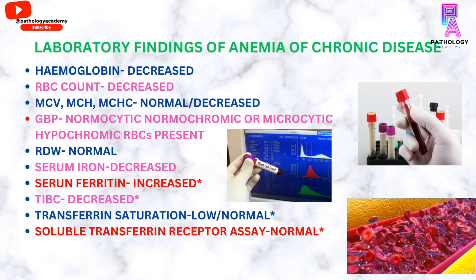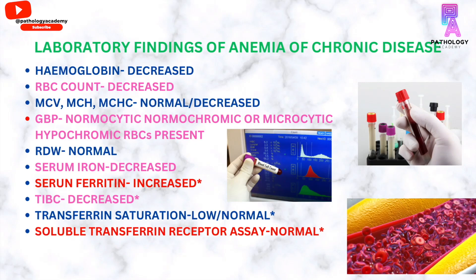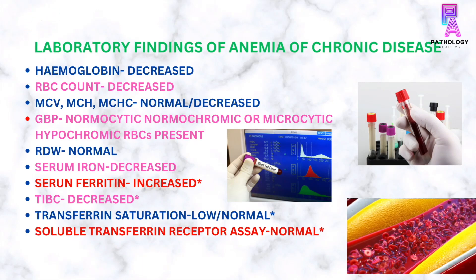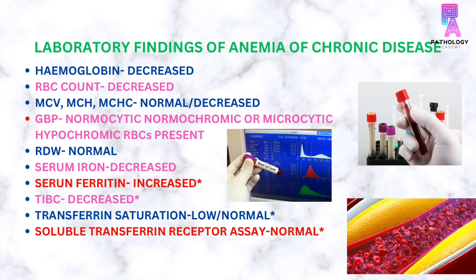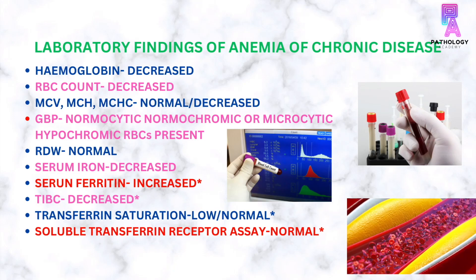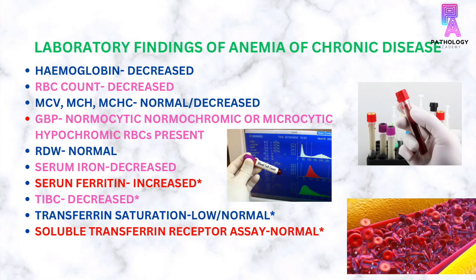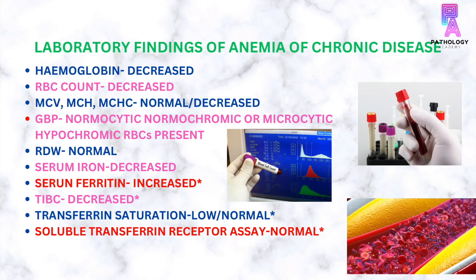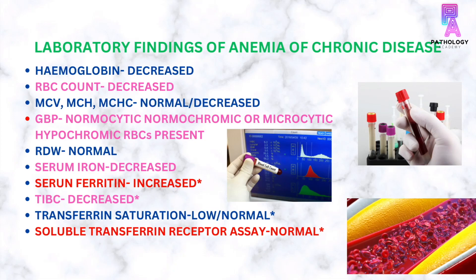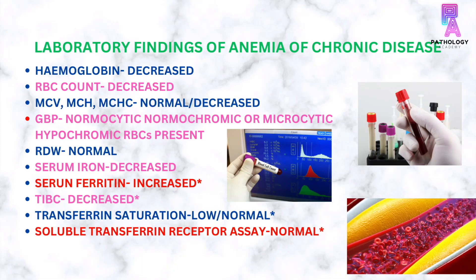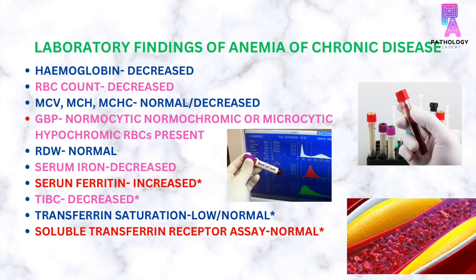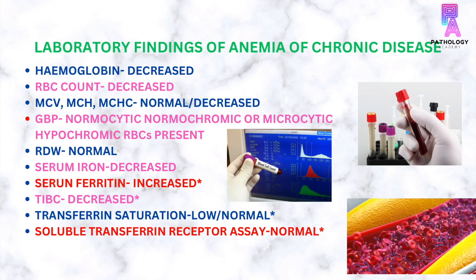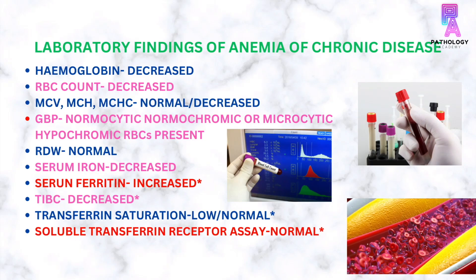The laboratory findings in anemia of chronic disease include decreased hemoglobin, normal or low mean corpuscular volume, normal or low mean corpuscular hemoglobin, and normal or low mean corpuscular hemoglobin concentration. The red cell distribution width is normal. The general blood picture can show presence of normocytic normochromic RBCs or microcytic hypochromic RBCs.